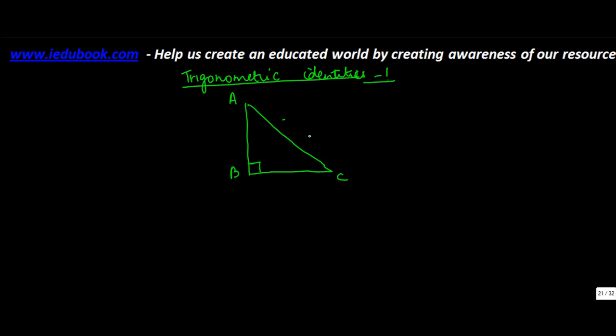A trigonometric identity basically is a relationship between certain identities which is true for all the values of the variables. Let me first derive one identity and then I will explain what that means.